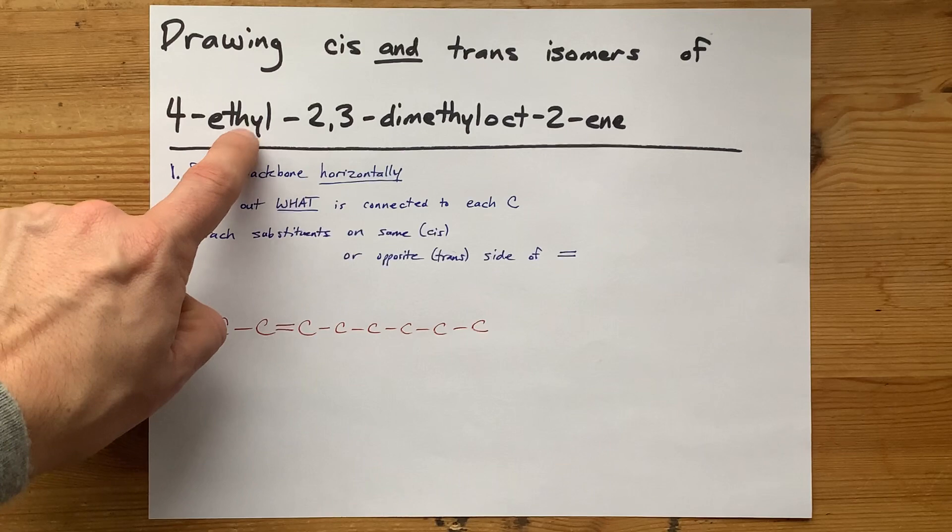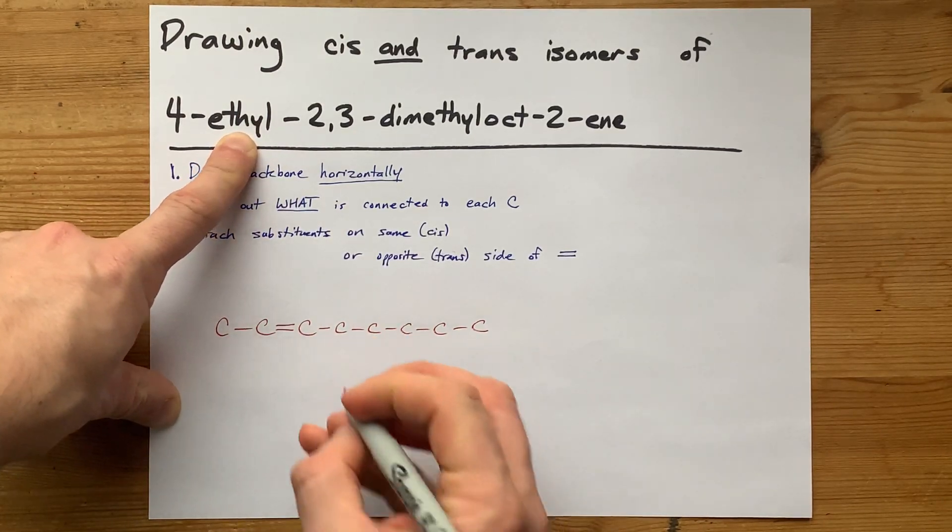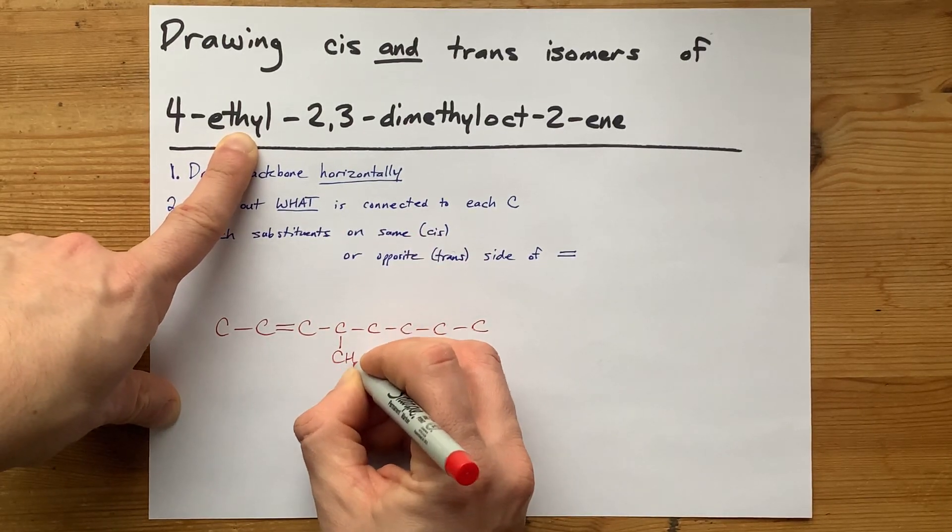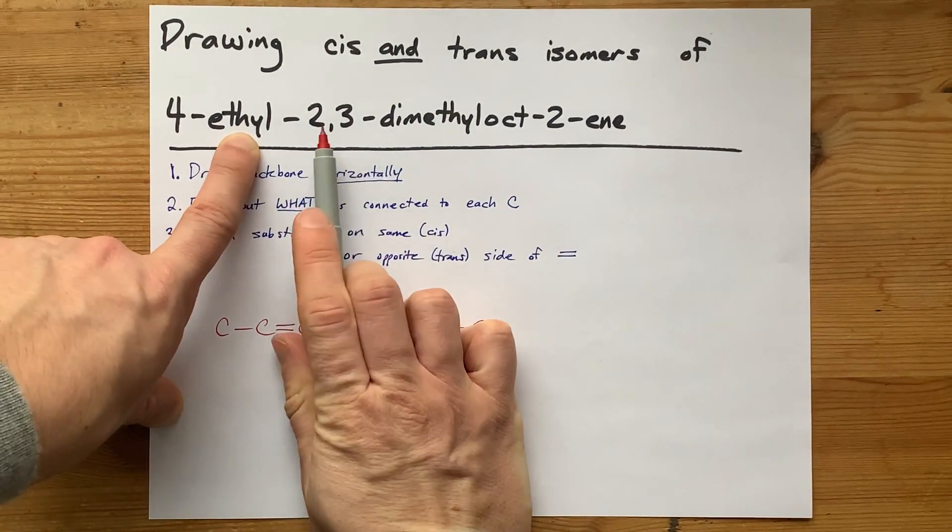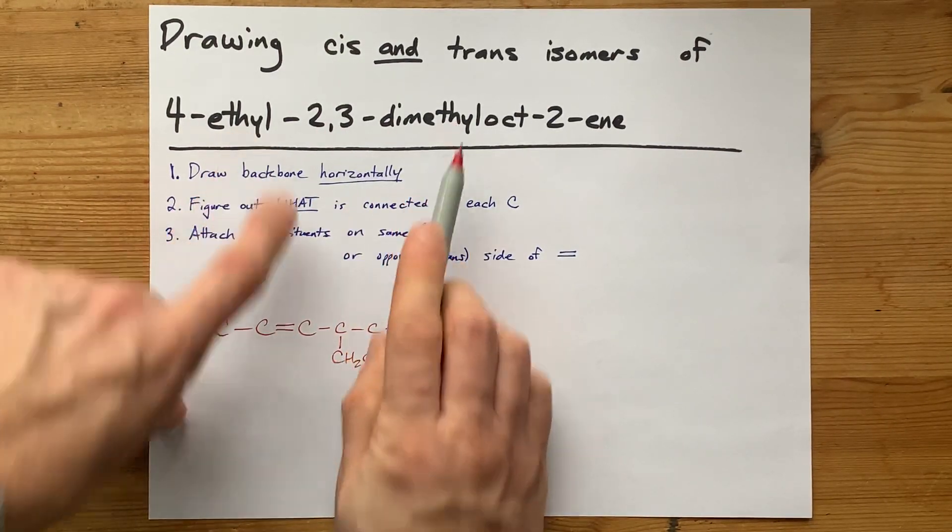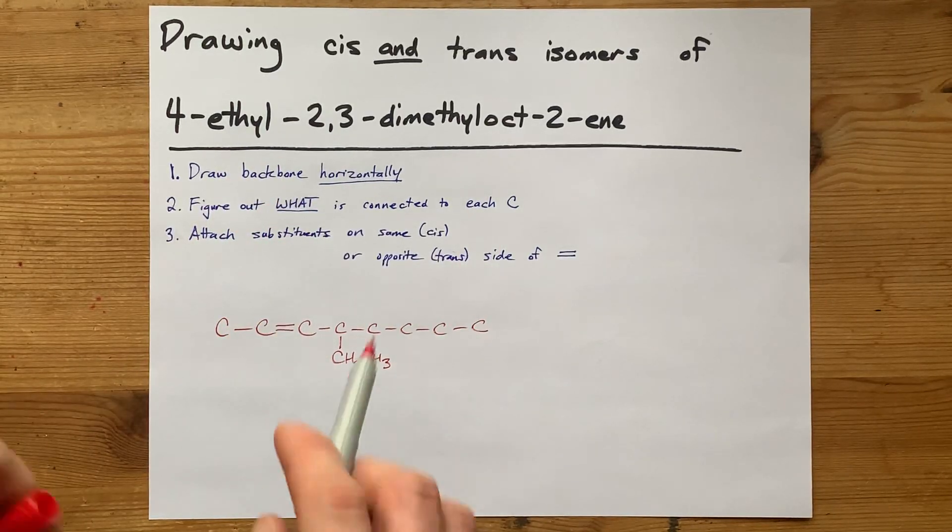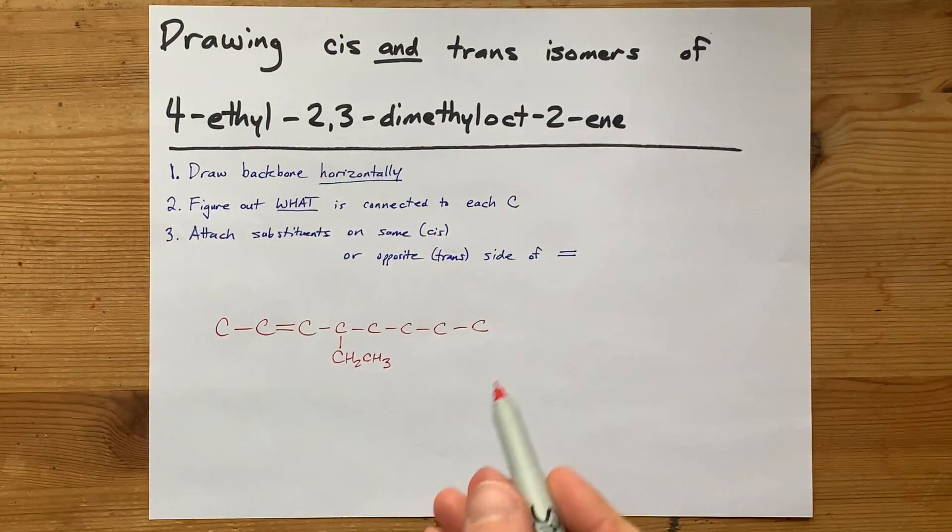On carbon four, I'm supposed to have an ethyl group. That's safe to attach simply because it's not where the double bond is. An ethyl group is a CH2, CH3. And then it also says 2,3-dimethyl. Carbons two and three are where the double bond is, and so it's these methyl groups that are either cis or trans to each other.